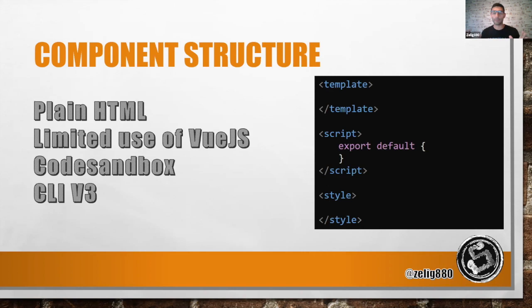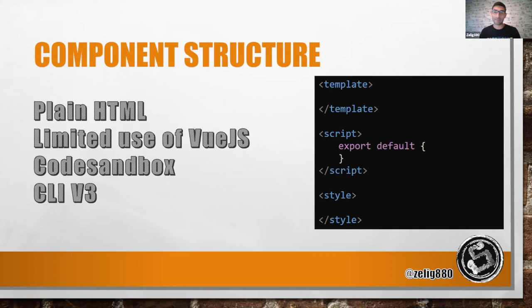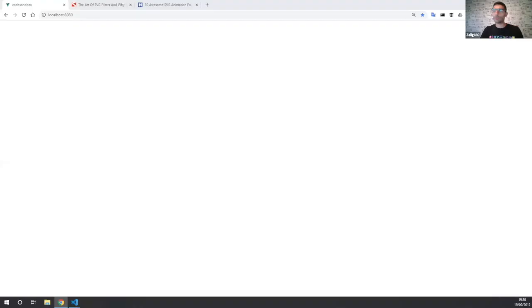The first step is to define a component structure. I have a particular way of doing so. Many developers first define properties, define data, and add loads of stuff right away. I do the other way around — I like to start with very plain HTML, add a little bit of CSS, and build the proof of concept on top of that before adding any JavaScript. Doing that supports me in being very flexible, making components that are very reusable, and I can change my mind without spending time going through all different iterations. The code also stays quite clean. I usually like to use CodeSandbox to get started, and I have a Vue CLI version 3 application running on my machine for today's demo.